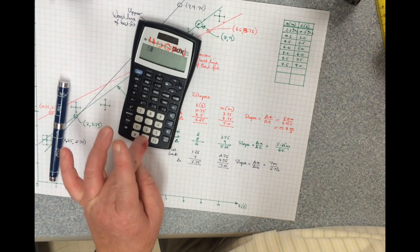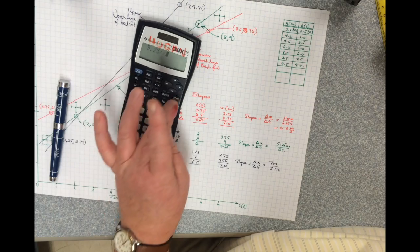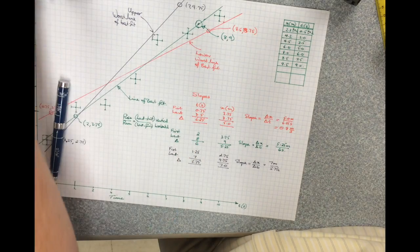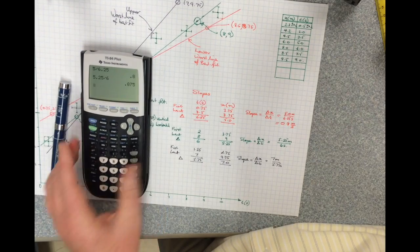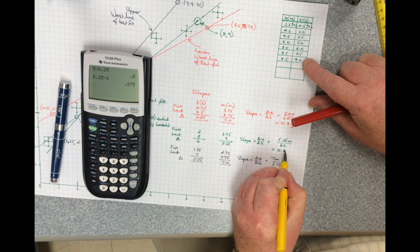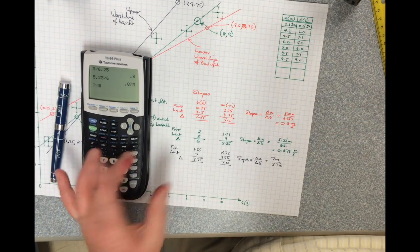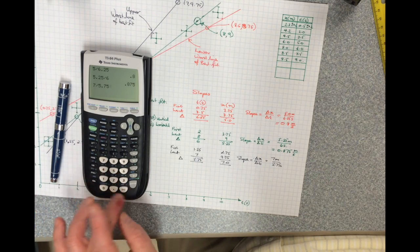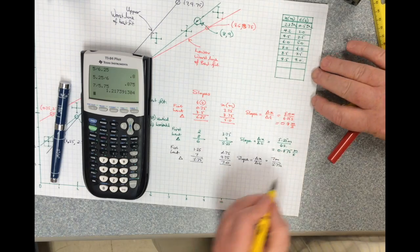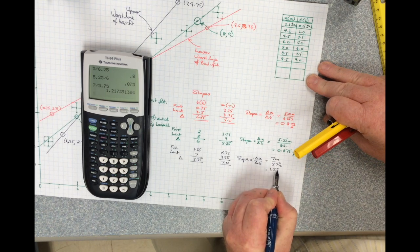This one here is 5.25 divided by 6, which is 0.875 meters per second. And this final one is 7 divided by 5.75 is 1.22 meters per second.